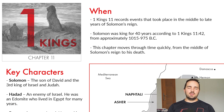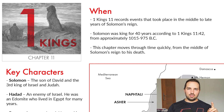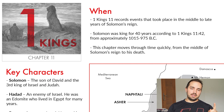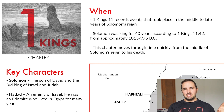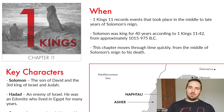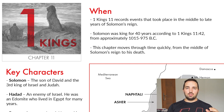1 Kings 11 records events that happened in the middle to late years of King Solomon's reign over Judah and Israel. He reigned for 40 years from approximately 1015 to 975 BC, and here we're going to see time speed up quite a bit. The chapter moves through time quite quickly from the middle of Solomon's reign to his death at the end of the chapter.